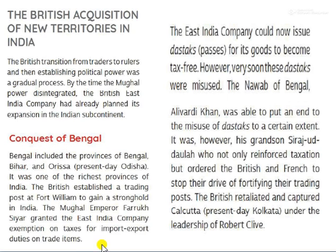Conquest of Bengal. Bengal included the provinces of Bengal, Bihar and Orissa. It was one of the richest provinces of India. The British established a trading post at Fort William to gain a stronghold in India. This was helped by Mughal Emperor Farrukhsiyar, who granted the East India Company free tax exemption on import and export duties of trade.